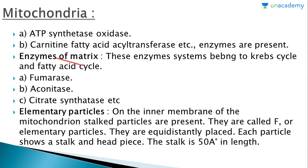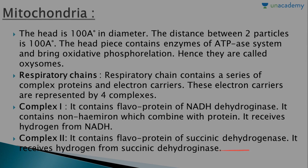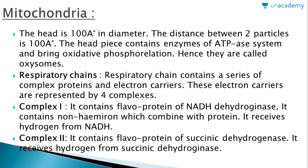The enzymes of the matrix belong to the Krebs cycle and fatty acid cycle, including fumarase, aconitase, citrate synthetase, etc. On the inner membrane of mitochondria, stalked particles are present called F particles or elementary particles. They are equidistantly placed; each particle has a stalk and a head piece. The stalk is approximately 50 angstroms in length, the head approximately 100 angstroms, and the distance between two particles is approximately 100 angstroms. The headpiece contains enzymes of the ATPase system and carries out oxidative phosphorylation, so they are called oxysomes.